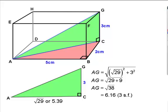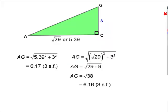Not quite the same. Let's just have a look at those two values. Those are our two calculations. On the left, when we use 5.39, we get 6.17. But on the right, when we use root 29, we get 6.16. Now, which is the better?